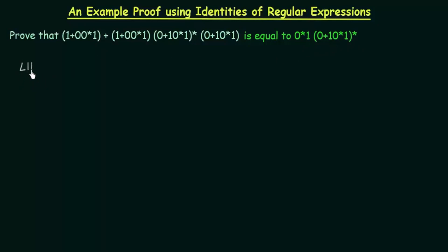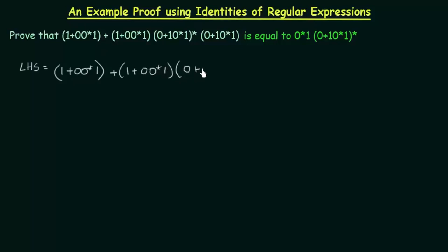We will first take the LHS. The LHS is: (1 + 0·0*·1 + (1 + 0·0*·1)·(0 + 1·0*·1))* · (0 + 1·0*·1). If you look here, you can see that the term (1 + 0·0*·1) is repeated — it appears here and also here. So we can take it as a common factor.